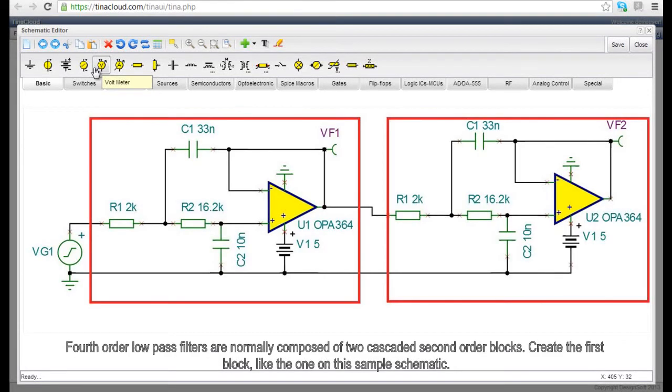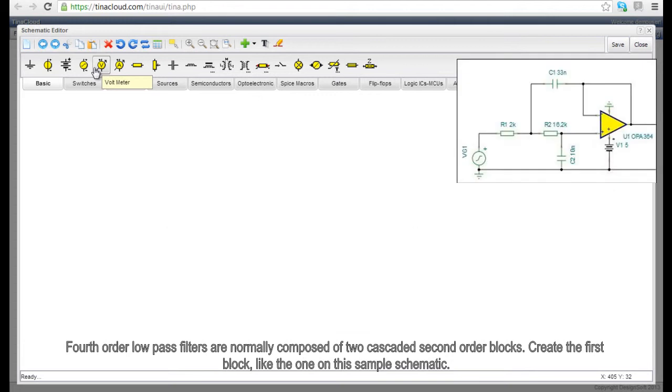Fourth-order low-pass filters are normally composed of two cascaded second-order blocks. Create the first block like the one on this sample schematic.